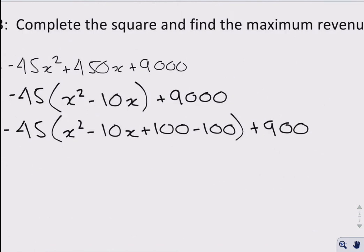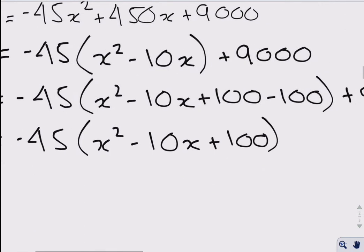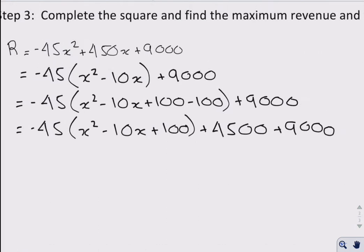Okay, the plus minus 100. Remember, it's some work that's done off to the side, very important, which equals negative 45, x squared minus 10x plus 100, and then remember the 45 hits the negative 100 and brings it outside the bracket to give me 4500 plus 9000. And my final answer is going to be negative 45(x minus 10) squared plus 13,500. There you have it.